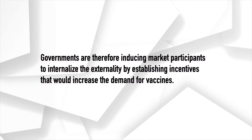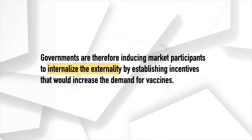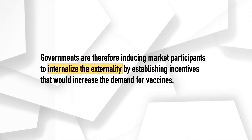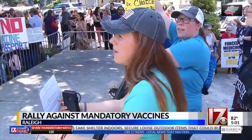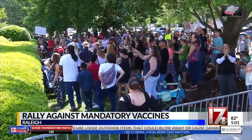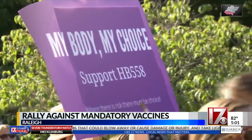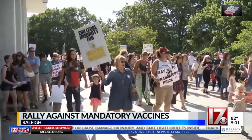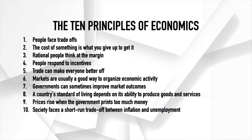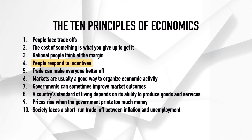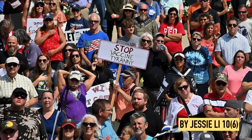Governments are therefore inducing market participants to internalize the externality by establishing incentives that will increase the demand for vaccines. On another note, it is still imperative to consider the impact and effect of such incentives, as society may not respond as predicted. Some may be even more discouraged to receive vaccinations, claiming that cash incentives support their theories about a corrupted and ill-intentioned government. According to principle 4 of the 10 principles of economics, people respond to incentives — but sometimes incentives may lead to unintended consequences.